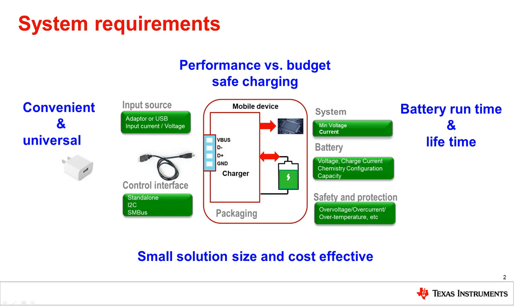Here we see a typical battery charging system. There's an input source, usually a power adapter, a battery, and a system power rail. The charge controller is responsible for partitioning the power from the adapter between the system and the battery.